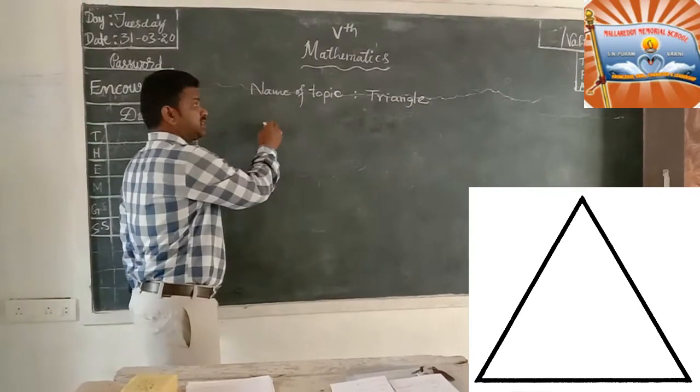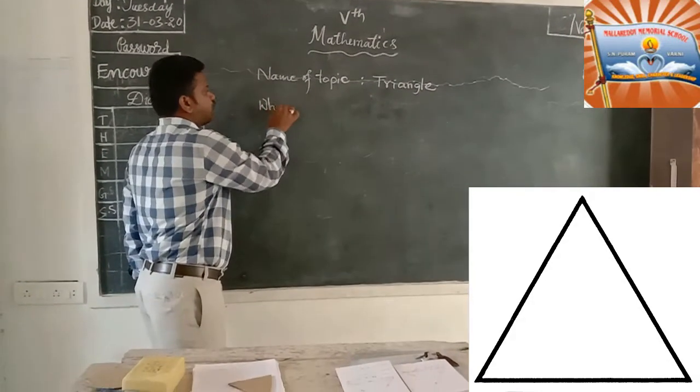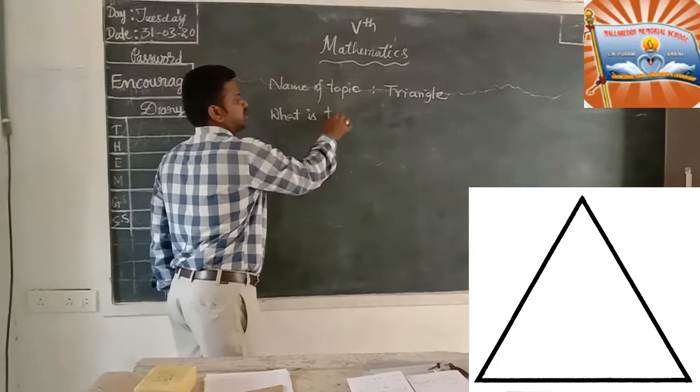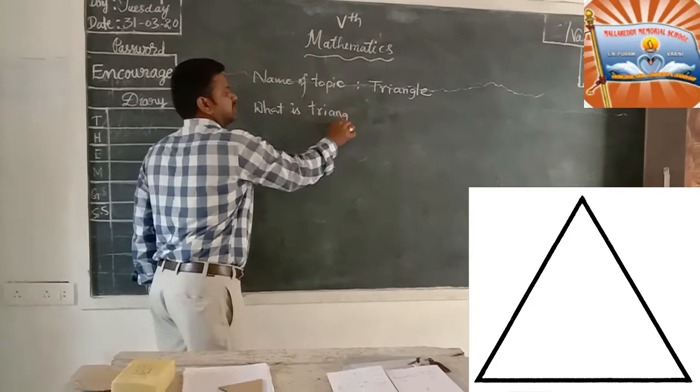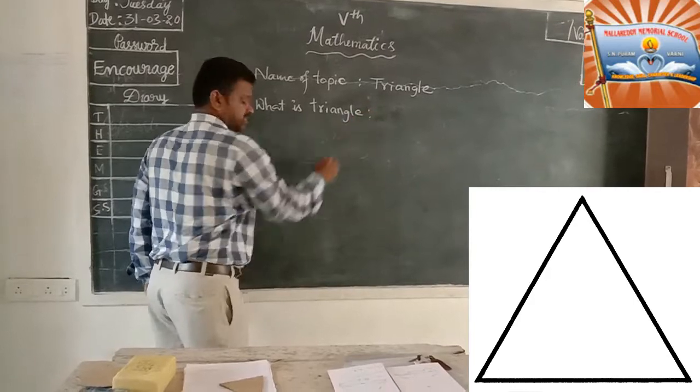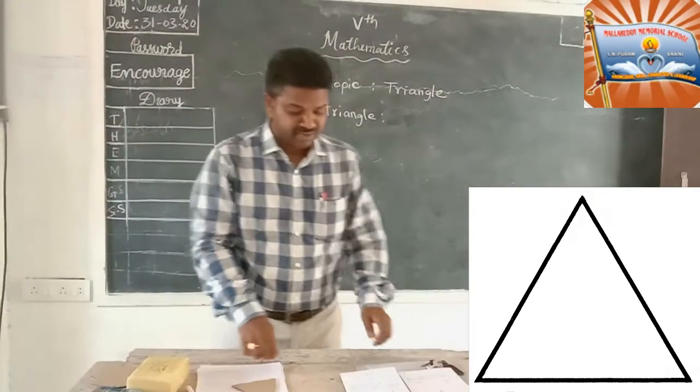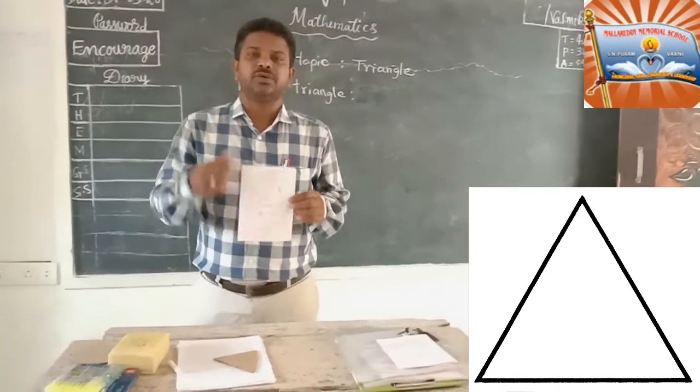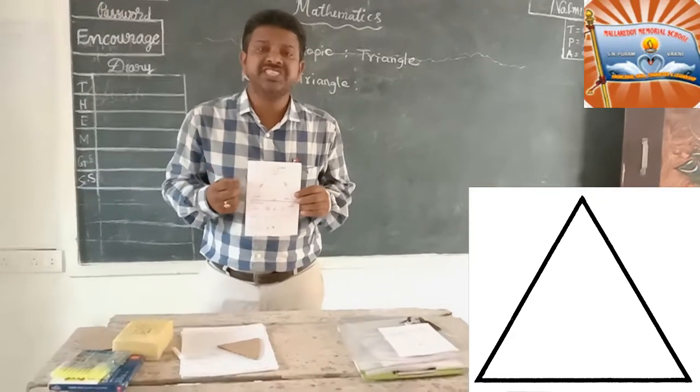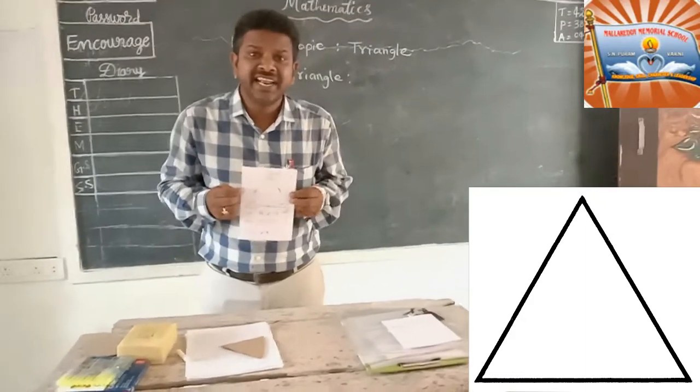The first question is, what is triangle? The closed figure which is bounded by three line segments is called triangle.